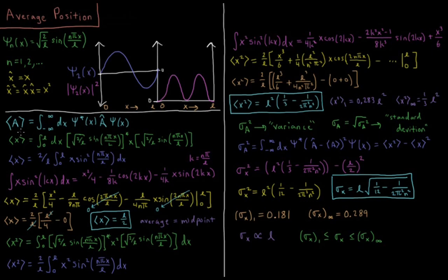So if we want to calculate the average value of something like the average position of our particle over our entire density, we can do that because we have our probability density, and what we can do is use the operators for that property.